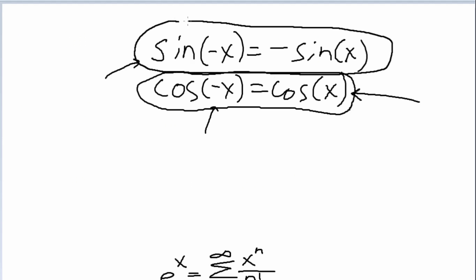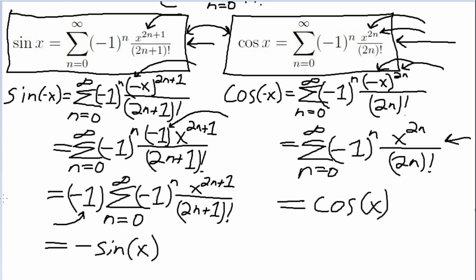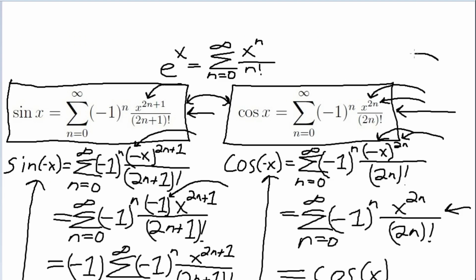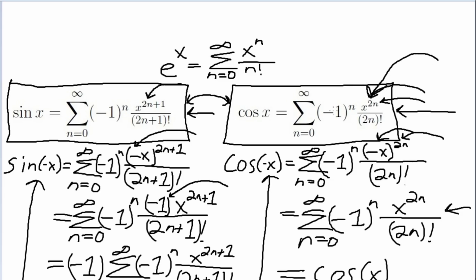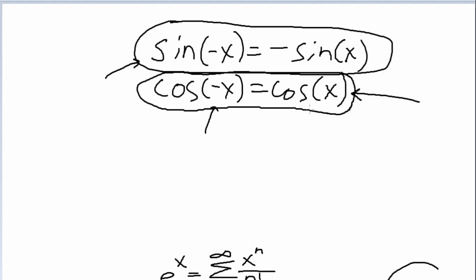So the trick here is not every time to go through these formal proofs of these characteristics, but just to look at the exponent. If you see that x is being raised to an even exponent, then we're going to have an even function. In this case, cosine of x.